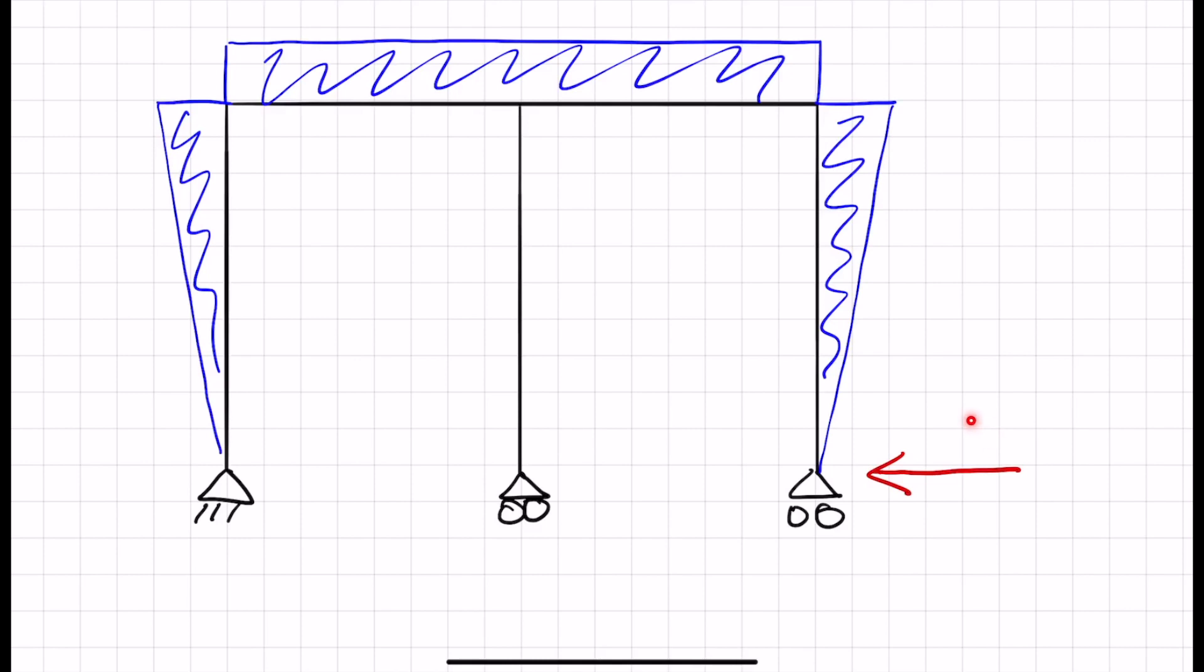In my mind, I was thinking here is a horizontal force, concentrated load. Because these two are rollers, that means that the only place where you can get a horizontal reaction is at the left-hand support. And basically, that is what I thought was the end of the reactions.